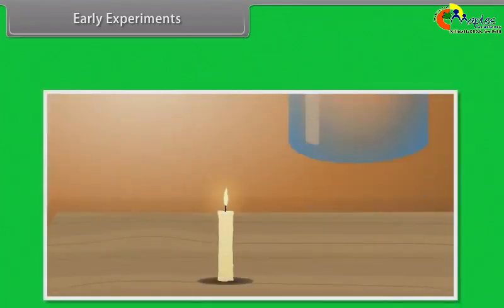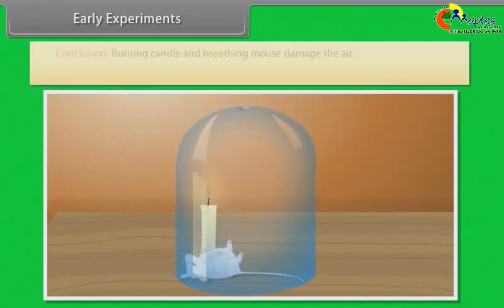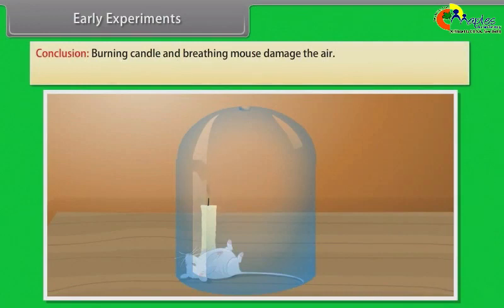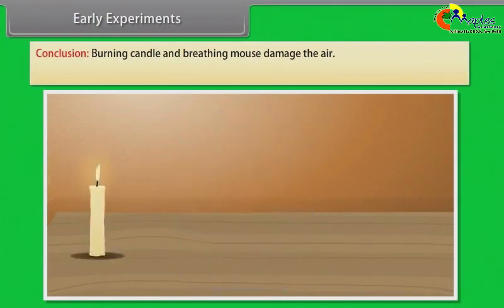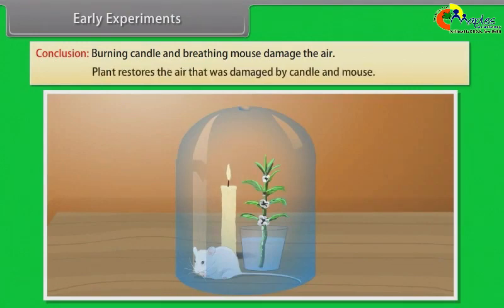Early Experiments: Priestly's experiment. First, he placed a candle in a closed jar and it got extinguished. After that, he placed a mouse in the bell jar and it also got suffocated. He concluded that burning candles and breathing mice damage the air. Now he placed a mint plant in the closed jar and observed that both mouse and candle survived very well. He concluded that plants restored the air that was damaged by candle and mouse.